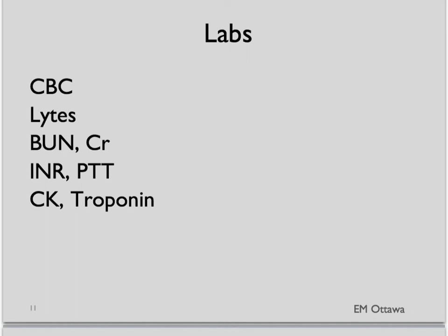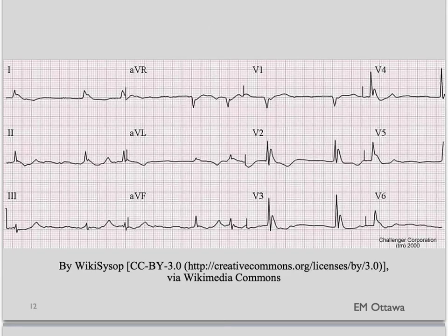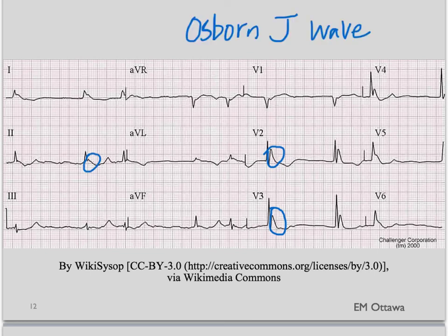We would also ask for an ECG. An ECG might show a deflection at the end of the QRS complex, as shown here. This is called an Osborne J-wave, and it is seen in moderate to severe hypothermic patients.